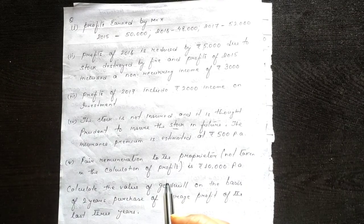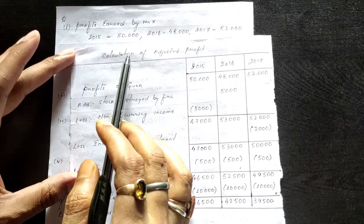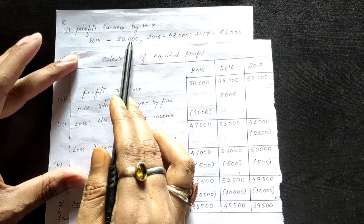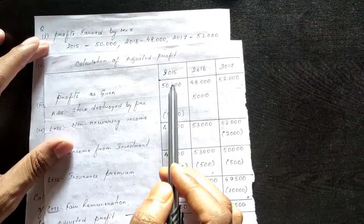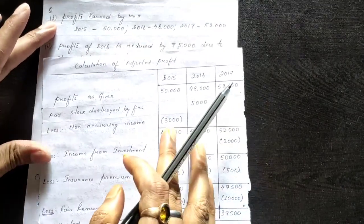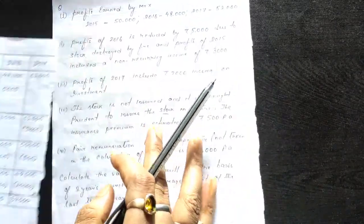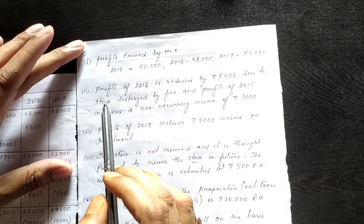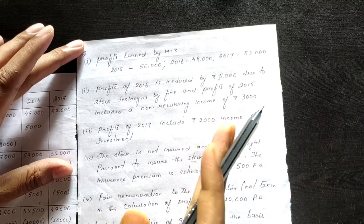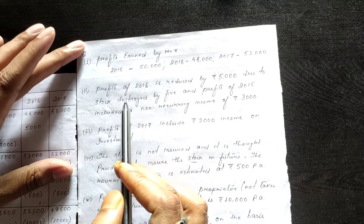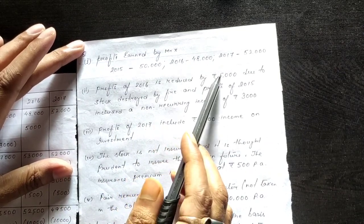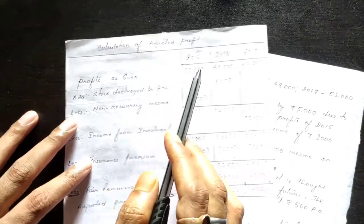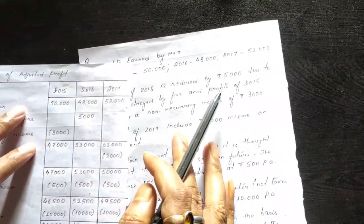Now let us start the solution. Make a table for calculation of adjusted profit for 2015, 2016, and 2017. First row: profit as given — 50,000 for 2015, 48,000 for 2016, and 52,000 for 2017. Adjustment one: stock destroyed by fire is not a normal expenditure, so this amount is added back. Under 2016, add 5,000 for stock destroyed by fire.